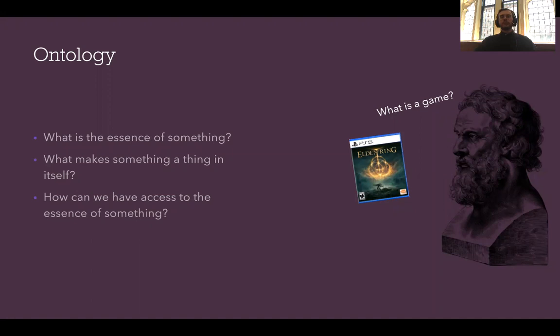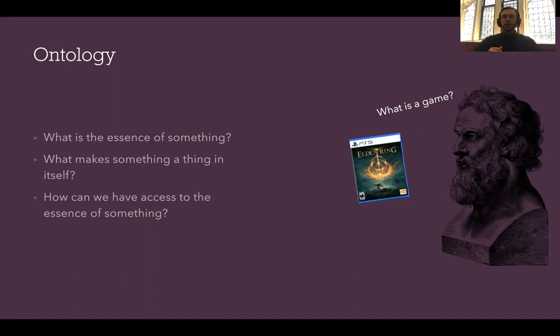Let us talk a bit about terminology. I've prepared four terms that might be of crucial importance for your assignment in the Representation and Configuration class, but also in general if you're doing any kind of research. Those are ontology, phenomenology, representation, and configuration. Ontology and phenomenology are all-star notions that I promise will be helpful in any kind of research you're doing.